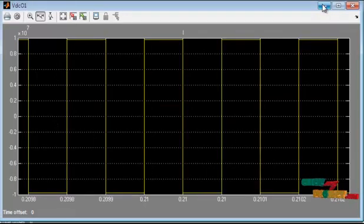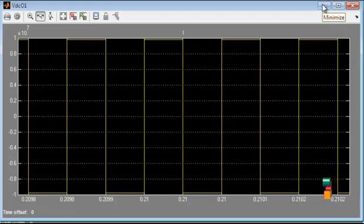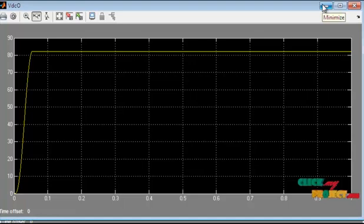After that this is the output DC current. And next one is the output DC voltage, that range is 85 volts. After that, the converter output is fed into the inverter section.